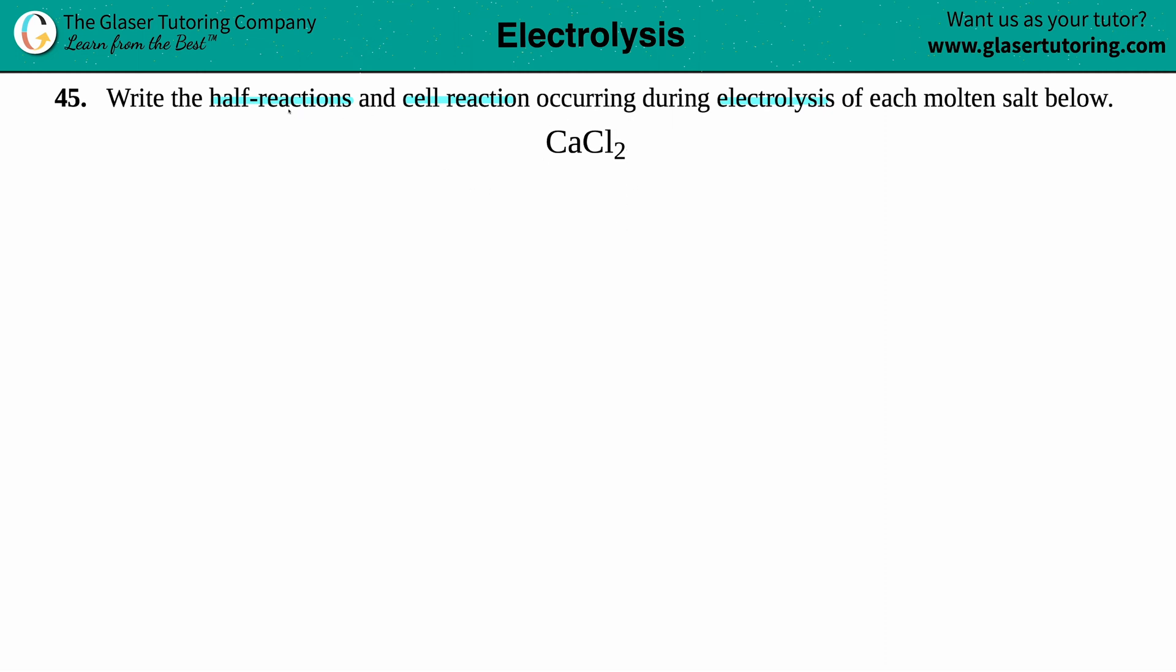So we're going to write the two half reactions to make the one whole cell reaction. Let's go. All we have to do here is just find out what our starting material is. And since this is an ionic salt, it's just an ionic equation. We're just going to break this down into its two ions.